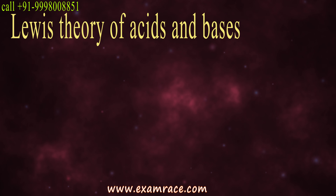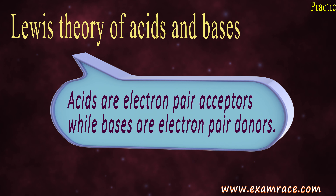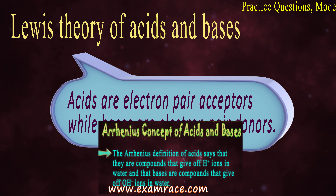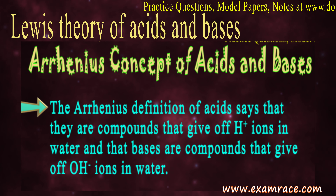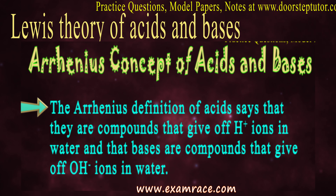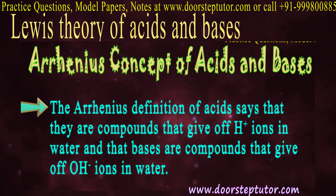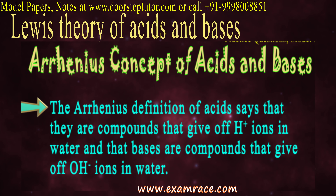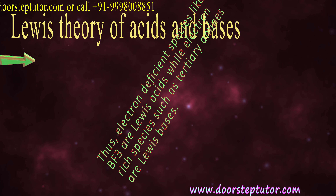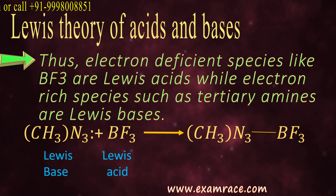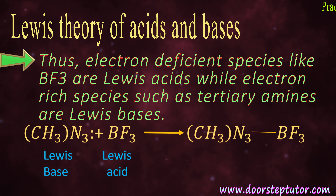The Lewis theory is about electron pair accepting and donating. The acceptors are the acids and the donors are the bases. In the Bronsted-Lowry theory, acids were the donors of H+ ions. Here, we are talking about electron pairs — acceptors and donors are defined differently. Let's understand this with an example. We have BF3, which is an electron-deficient species, so it is a Lewis acid because it wants an electron pair.